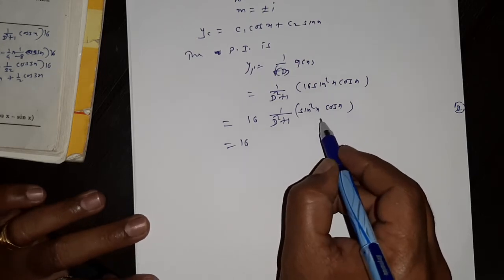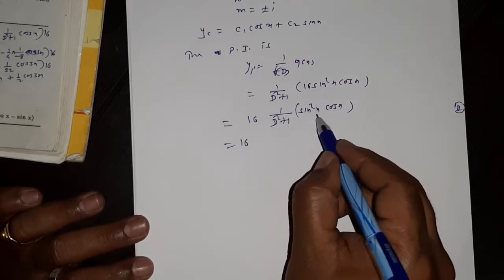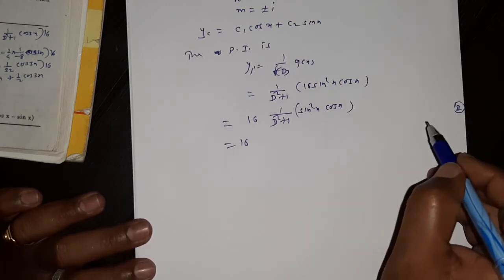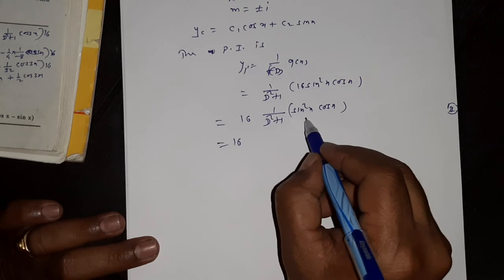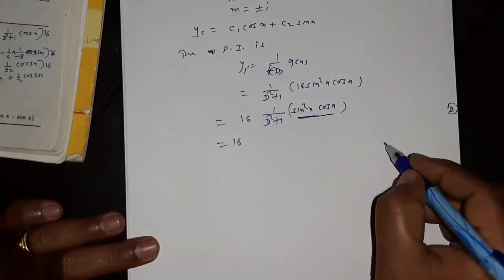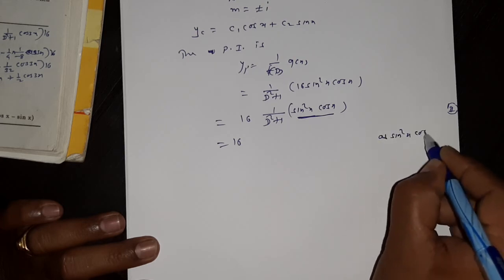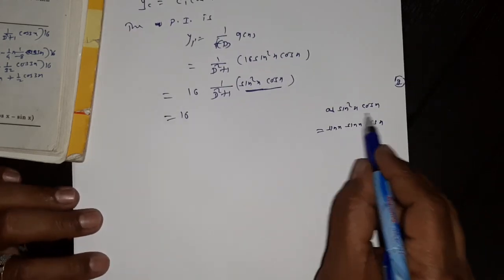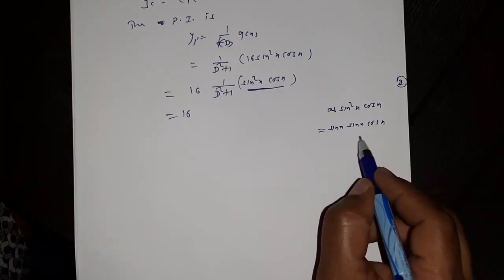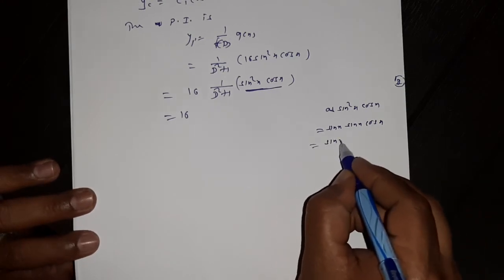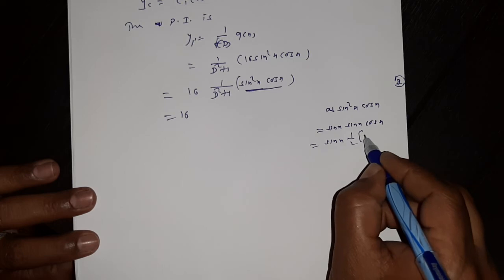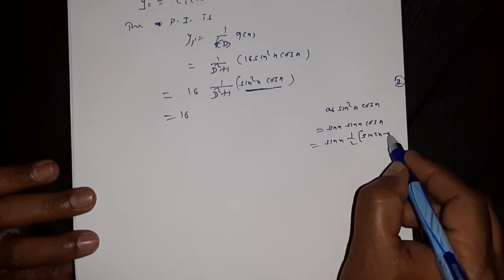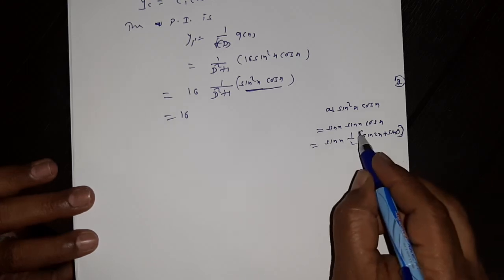We need to reduce sin²(x)·cos(x) as a sum of sine and cosine terms, removing the multiplication. The rough calculation: sin²(x)·cos(x) = sin(x)·sin(x)·cos(x) = sin(x) · [sin(x)·cos(x)] = sin(x) · (1/2)sin(2x). Using the product-to-sum rule sin(a)·cos(b) = (1/2)[sin(a+b) + sin(a-b)].